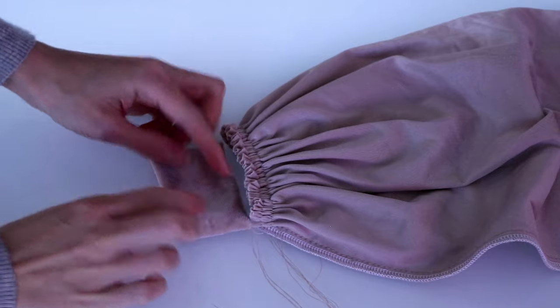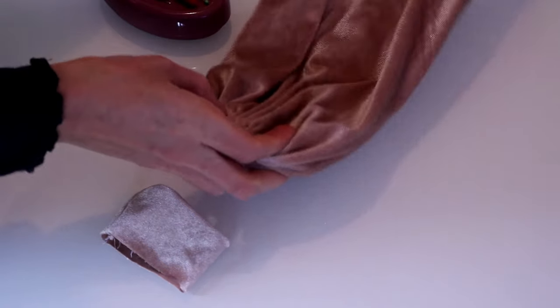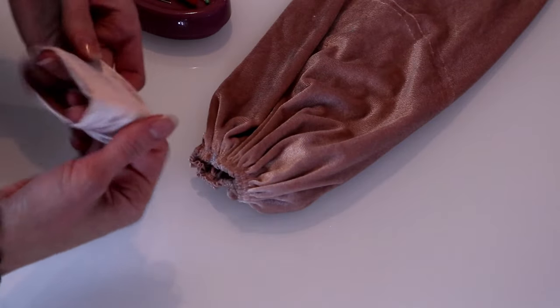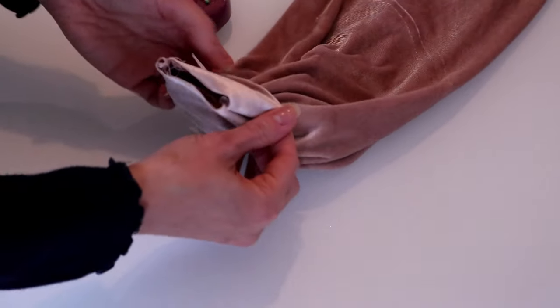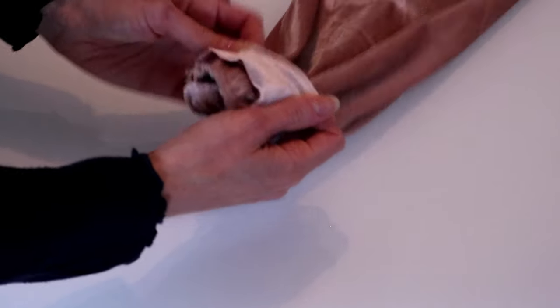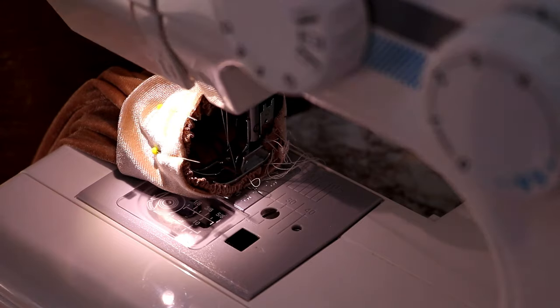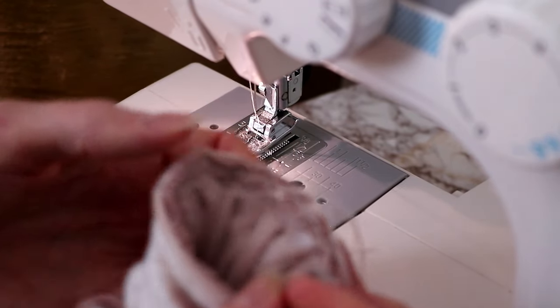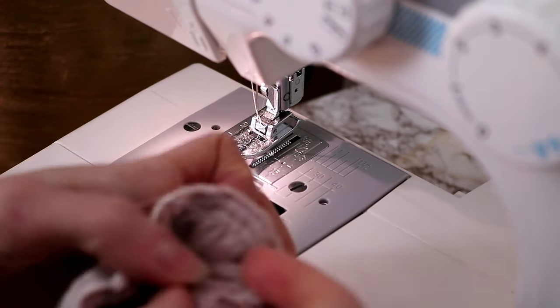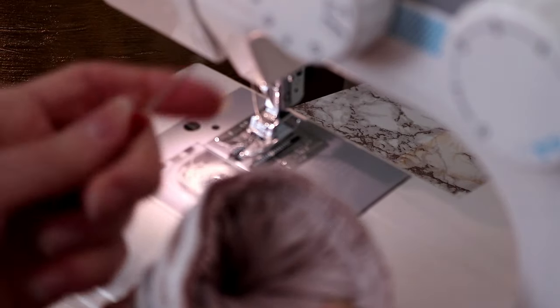Fold the cuffs in half lengthwise and place one sleeve inside one cuff. Line up raw edges of all the fabric layers and match up the seams. Pin in place and stitch along seam line. Finish raw edges and remove the gathering threads.